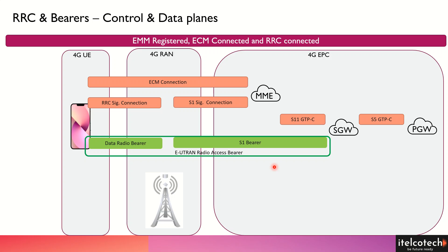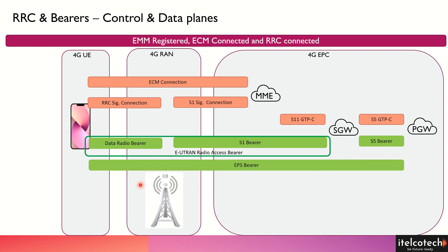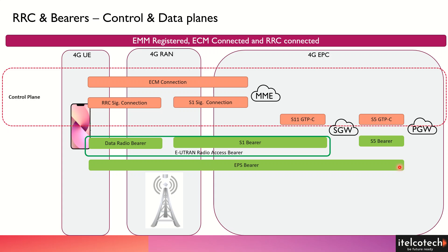The next element to emphasize is the bearer that normally exists when there is data transmission happening between the user and the core network. Along with the bearer at the radio level, there is a bearer set up at the back end between the SGW and PGW. These bearers combined together create the EPS bearer — the complete end-to-end bearer from the UE to the core network. When there is connectivity towards the internet or an external network, it is considered a PDN connection, which we'll cover in subsequent slides.